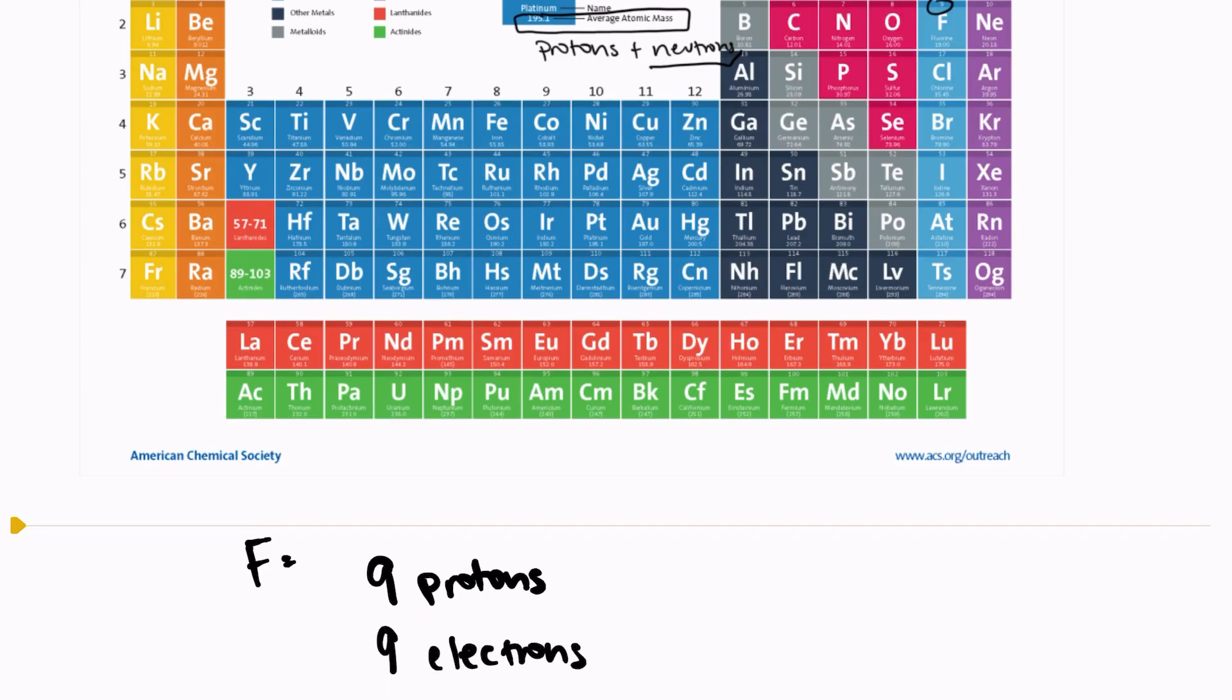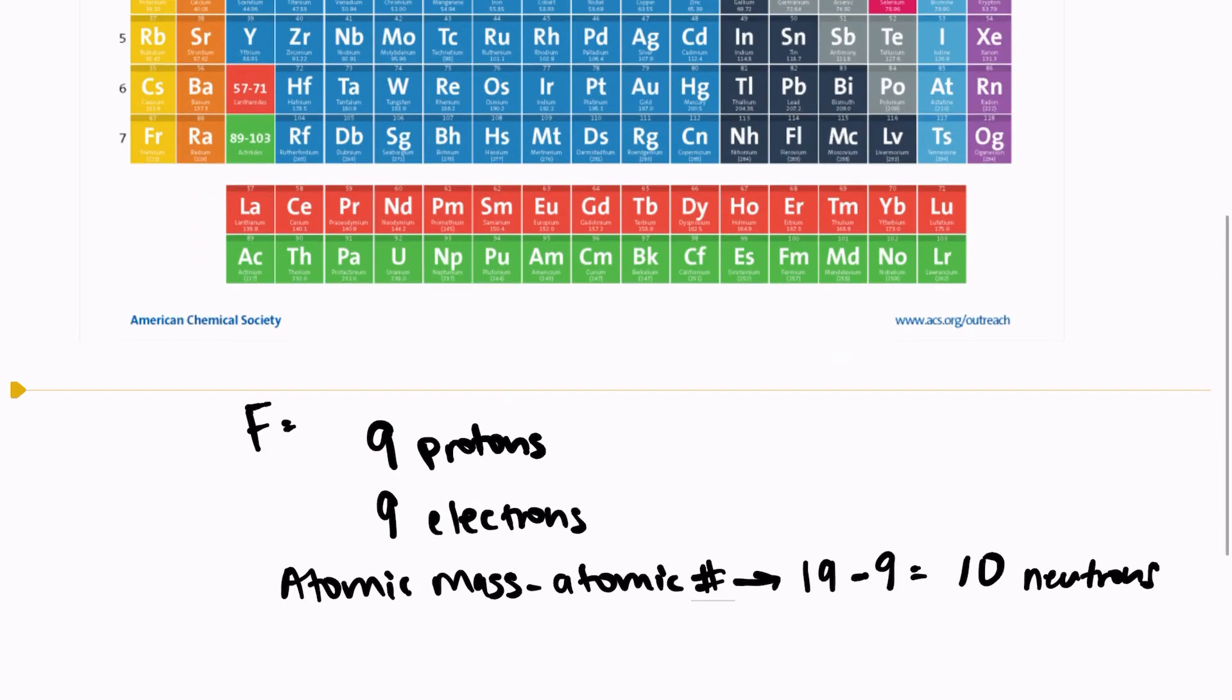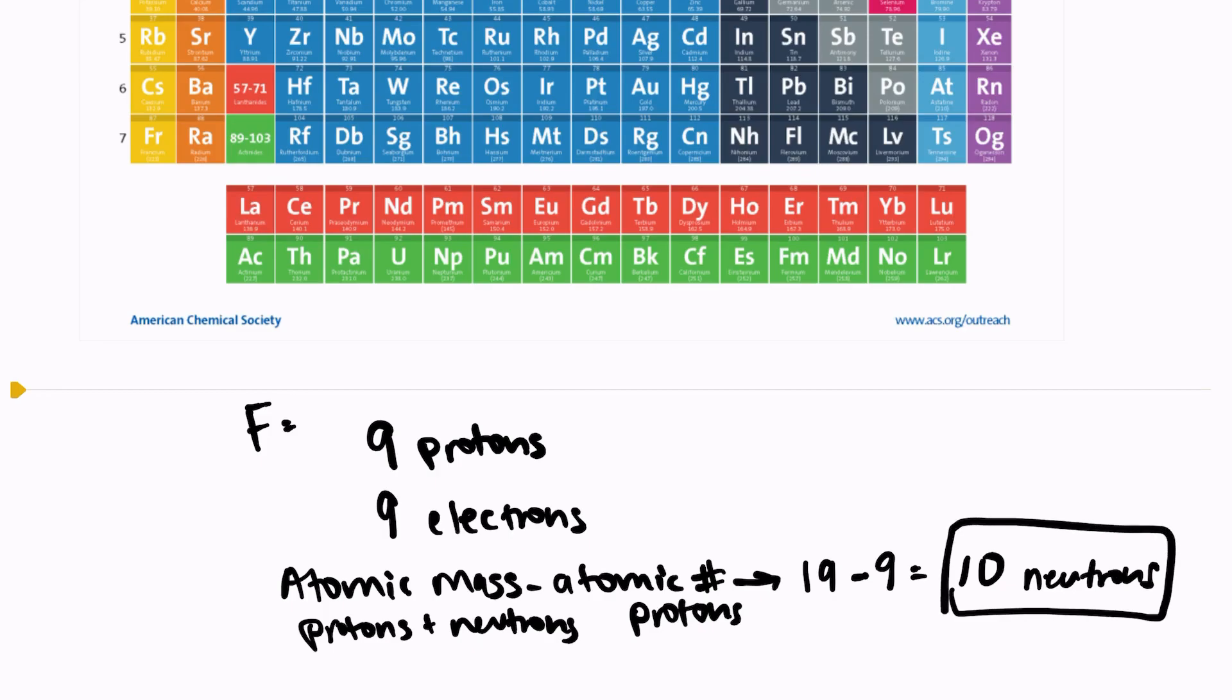And then to find the number of neutrons, we're going to take the atomic mass minus the atomic number. Remember, the atomic mass is the number of protons and neutrons, and the atomic number is the number of protons. So if we subtract the two of those, we should find the number of neutrons.